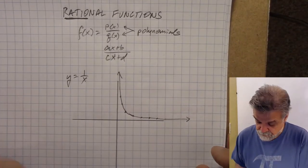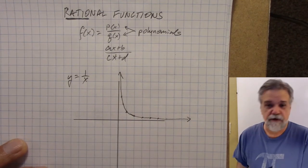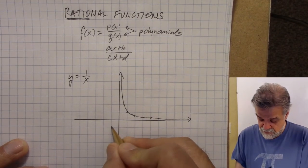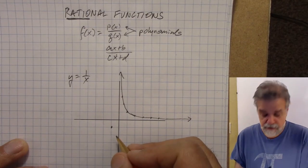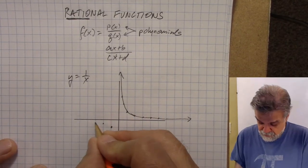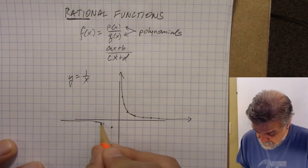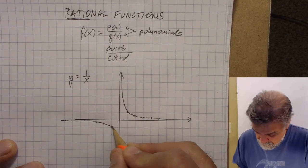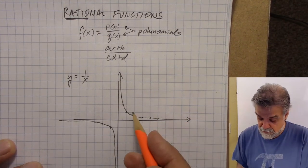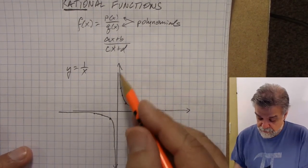What about when x is 1/2? We have 1 over 1/2, which is 2. When x is 1/3, we have 1 over 1/3, which is 3. So it's going to go up like that. And what about when x is negative? When x is -1, y is -1. 1 over -2 is -1/2, and 1 over -3 is -1/3. We get a very similar looking shape on this side, basically the same shape rotated around the origin.